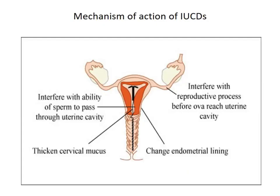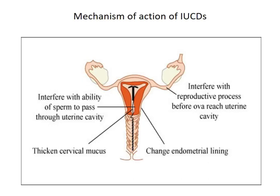The IUD can interfere with the passage of sperm to the ovum, interfere with the ovum reaching the uterine cavity, thicken the cervical mucus, and change the endometrial lining. The most widely accepted view is that the IUCD causes a foreign body reaction, leading to cellular and biological changes within the uterus which make it non-conducive for implantation. It is also believed to change the viability of the gametes and reduce the chances of fertilization rather than implantation.